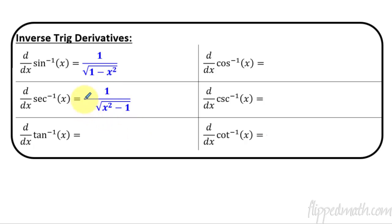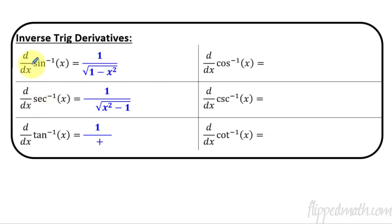For tangent, it does not start with an S, so there is no subtraction and no square root. You could also think of the T as looking like an addition sign, so there's addition instead. Since it's addition, the order doesn't matter — it's going to be x squared plus 1, or 1 plus x squared. That's commutative, so the order does not matter.